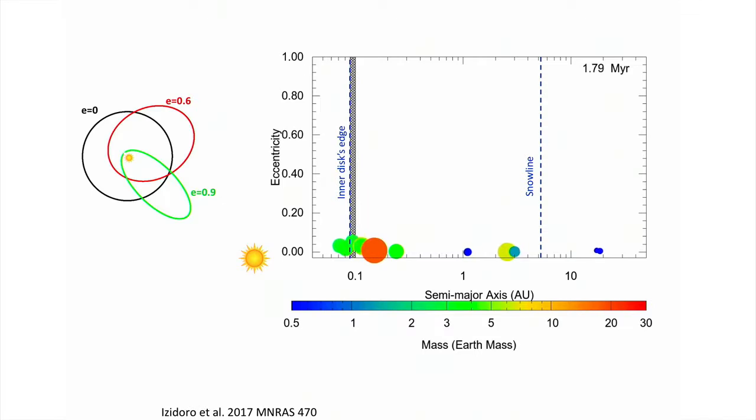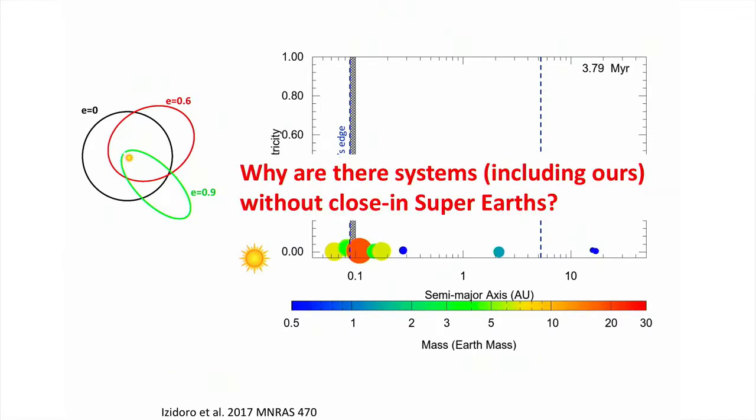This process of growth beyond the snow line and migration to the inner edge of the disk explains how super-Earths form, as we detailed in part seven. But this suggests that super-Earths should be ubiquitous—around 100 percent of stars, not 50 percent—so we'd like to understand how some systems, including our own solar system, do not have these close-in super-Earths.